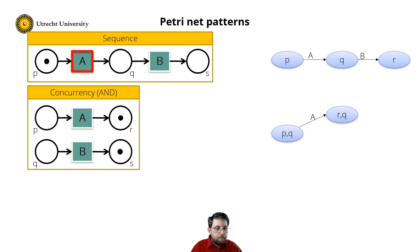After firing transition B, we end up in a state with one token in R and one in S. And of course, we could also have first fire transition B and then fire A.